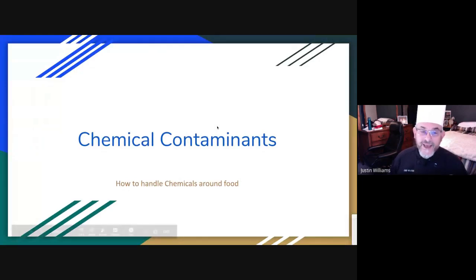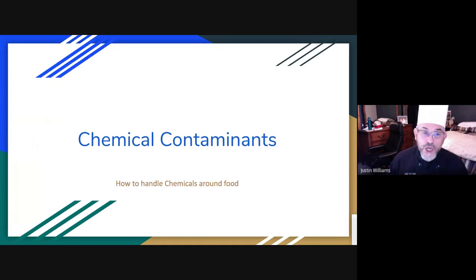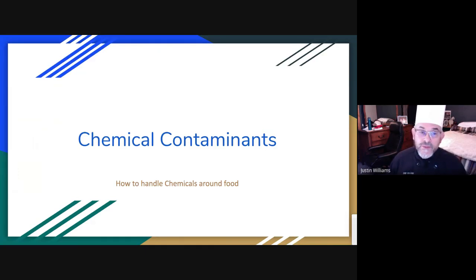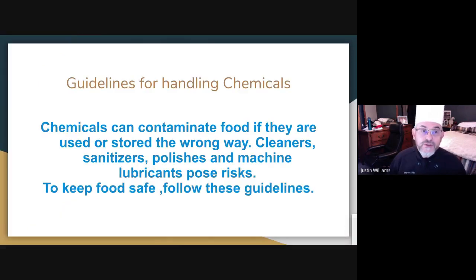Chemical contaminants. There are three different types of contaminants that you can have when it involves food. One of them is biological, one of them is physical, and one of them is chemical. Today we're going to talk about chemical contamination.